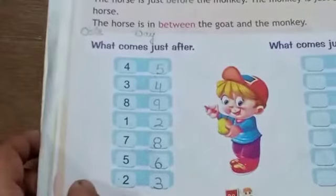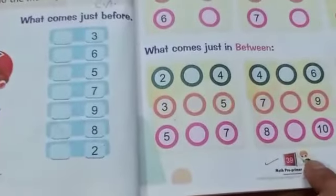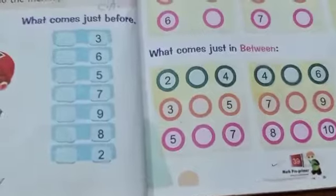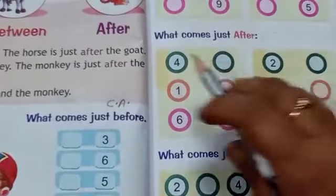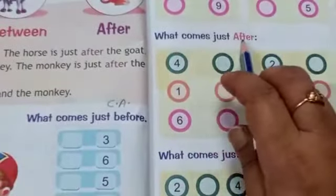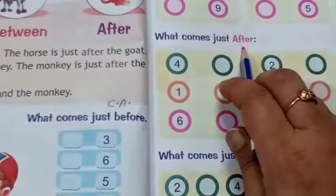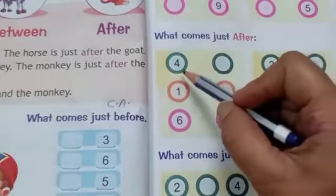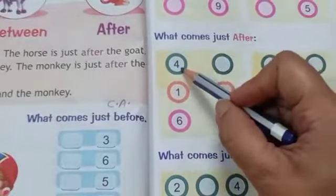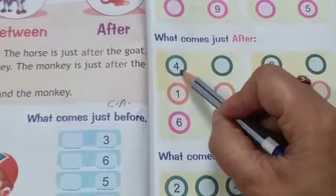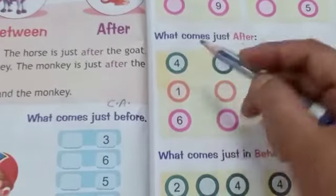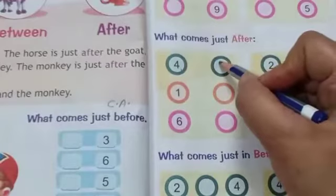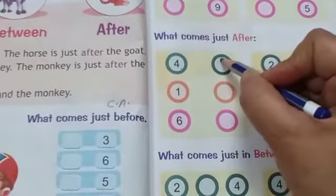Now kids, come to page number 39. Again we are going to practice what comes just after. What comes after? Aap meri saath zor se bolenge. What comes after number 4? Number 5.